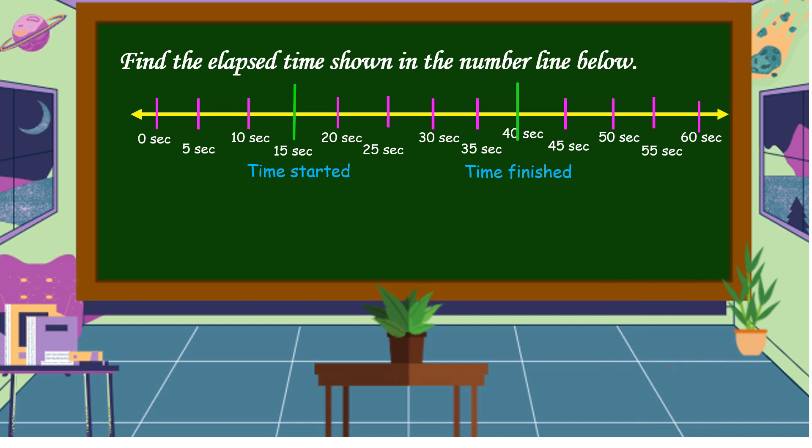Our number line is by 5 seconds. So, it started at 15 seconds and it ends at 40 seconds. So, let's count: 5, 10, 15, 20, 25. The elapsed time is 25 seconds.